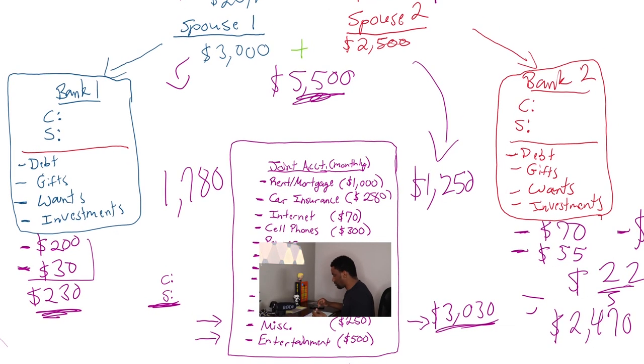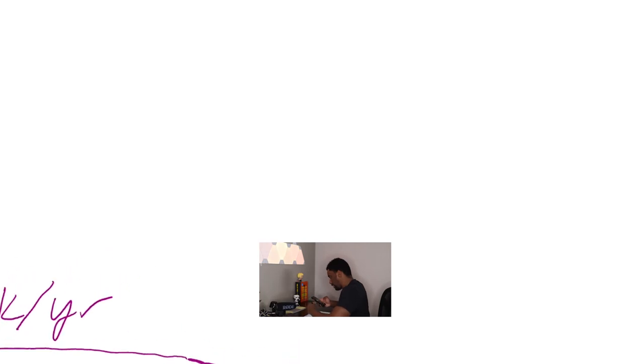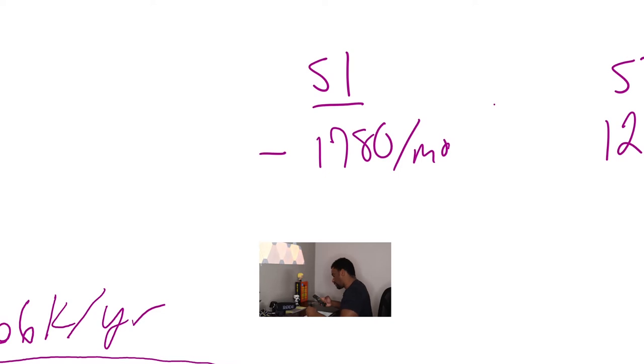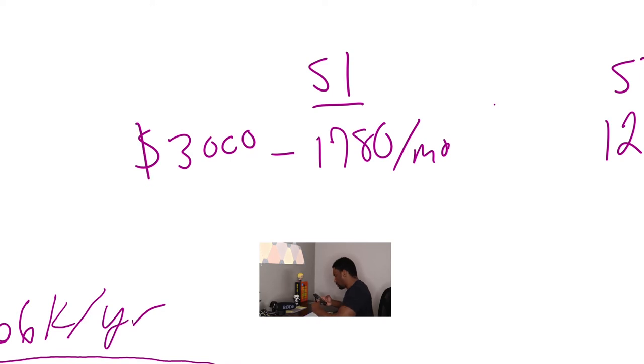So if we move up to a clean area right here, you'll see that spouse one, spouse two, spouse one spends $1,780 per month. Spouse two spends $1,250 per month. So when you consider that he makes $3,000 and when you consider that she makes $2,500, she's left with $1,250 per month. Now, keep in mind, we have not taken out what they spend on themselves yet, right?